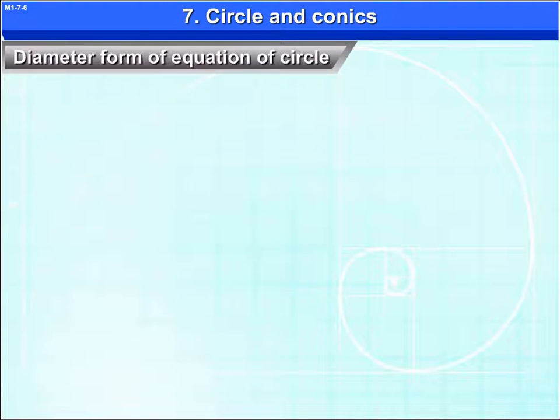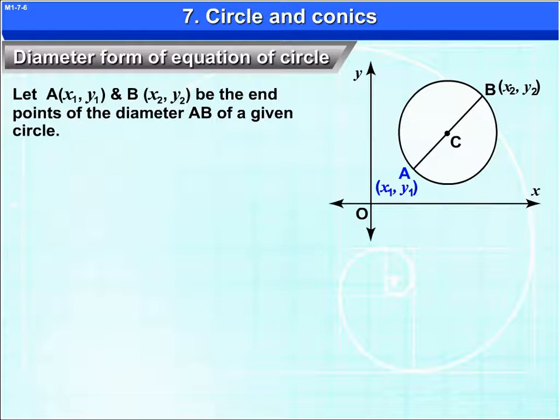Diameter form of equation of circle. Let A(x₁, y₁) and B(x₂, y₂) be the endpoints of the diameter AB of a given circle.